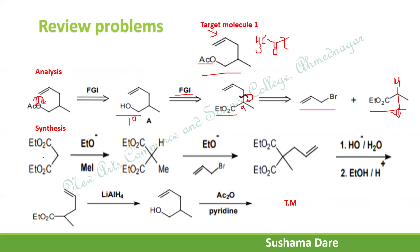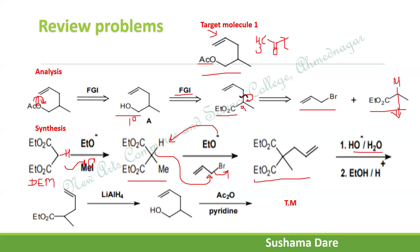We start with diethyl malonate and treat it with sodium ethoxide in ethanol. The base abstracts the acidic proton, generating a carbanion which attacks the substrate, departing the leaving group and inserting the methyl group. A second highly acidic proton is then abstracted by sodium ethoxide, which attacks again to insert a second group. At the end, we obtain the doubly alkylated malonate. We then do not want the ester functional group, so hydrolyze it and heat to decarboxylate.